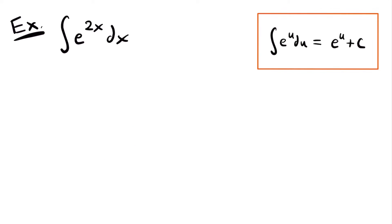For our second example, we have the integral of e to the power of 2x dx. We're going to need to use u-substitution because we have e to the power of some function that is not just x — in this case, it is 2x. When you see a power that is not x, you most likely want to set that equal to u. So we set u equal to 2x.